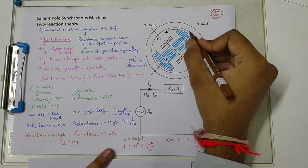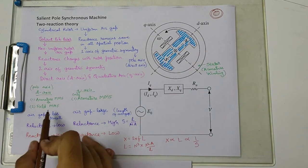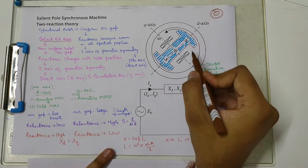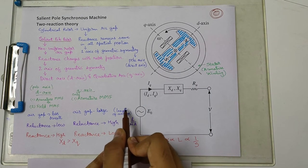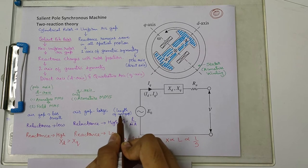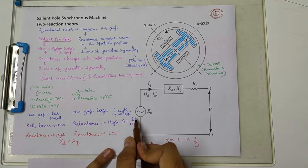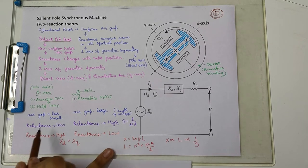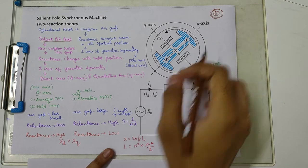The air gap on the direct axis is very small, and on the quadrature axis the air gap is very large. Reluctance is directly proportional to the length of the air gap. So if the air gap is large, reluctance is high; if the air gap is small, reluctance is low. Therefore, reluctance on the direct axis is low and reluctance on the quadrature axis is high.